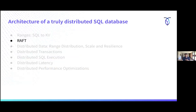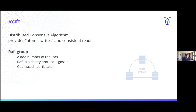We use Raft extensively in Cockroach. Raft is a distributed consensus algorithm — if you're doing distributed systems, it's an important thing to understand. It allows us to provide atomic writes and consistent reads. Someone asked how data integrity is handled when updating the same row from two different nodes — we're going to cover that. It's a combination of Raft and MVCC. Raft is a distributed consensus protocol that allows atomic writes and consistent reads across the distributed system.